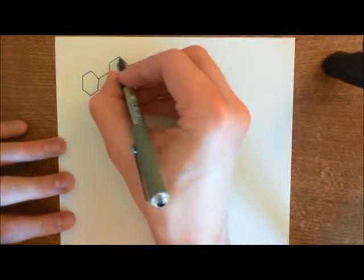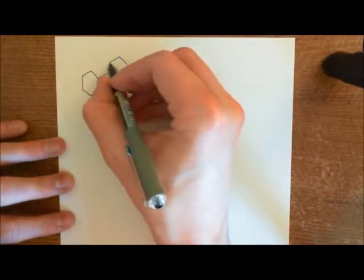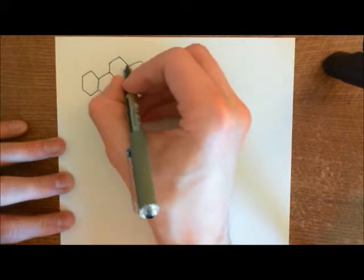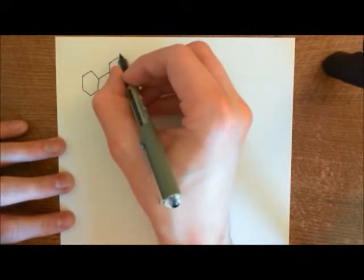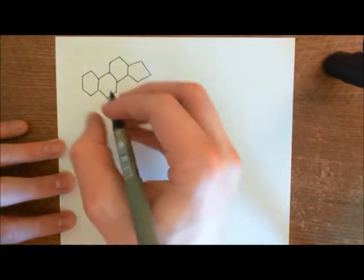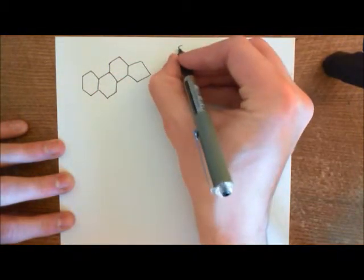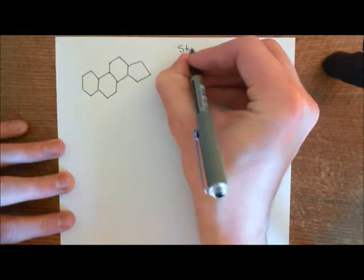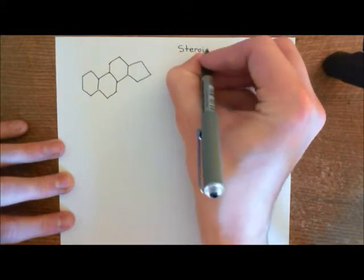For instance, if we take this carbon here, it's only got two bonds that we can see coming off it, which means that the other two bonds will be to hydrogen atoms coming off that carbon. So this is the steroid structure that we've shown. All steroids have this structure within them.